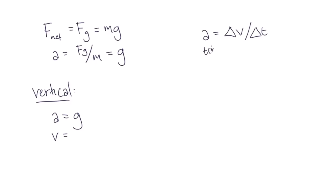So for time t, we know that our change in velocity is equal to g times t. We also know that our change in velocity is equal to our final velocity minus our initial velocity.